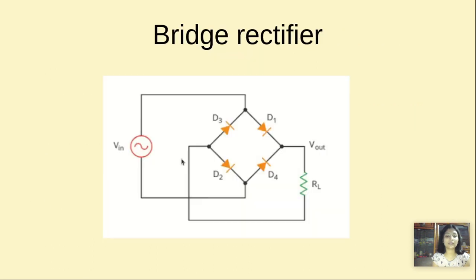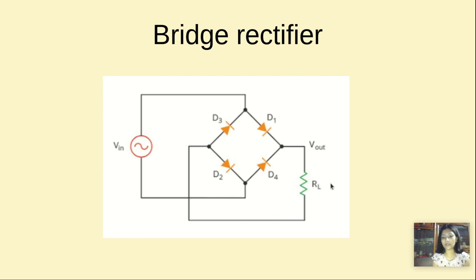Now let us come to the bridge rectifier. In the bridge rectifier, we have four diodes: D1, D2, D3, and D4. In the positive cycle, when this terminal is positive and this is negative, the current goes through D1, which is in forward bias, while D4 is in reverse bias. The current flows to R1 in this direction, and we get an output in the positive cycle.